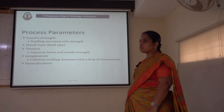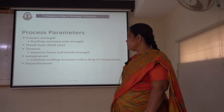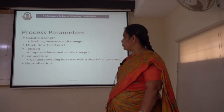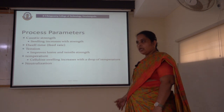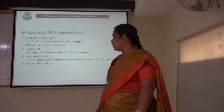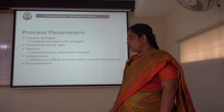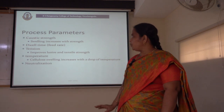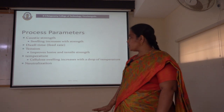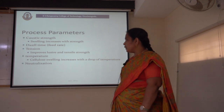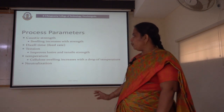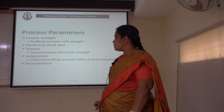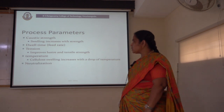Coming to the process parameters of the mercerization process. The first one is the caustic strength. The lustre increases with the increase in the concentration of the alkali. So we should take care of the percentage concentration or percentage strength of the caustic being used for this mercerization process. The next parameter is the dwell time, that is the feed rate of the fabric into the mercerization machine. The dwell time is a very important parameter in determining the efficiency of the mercerization process.